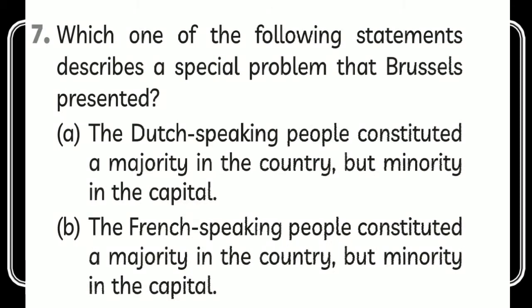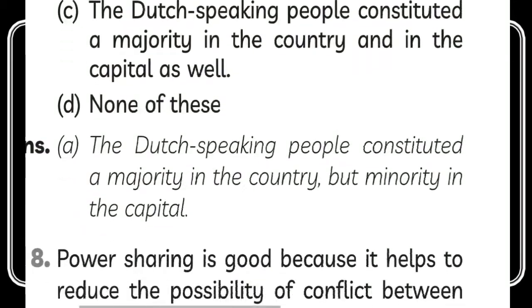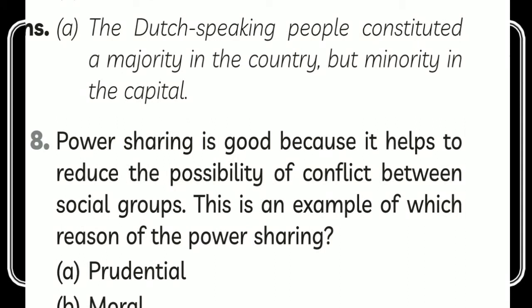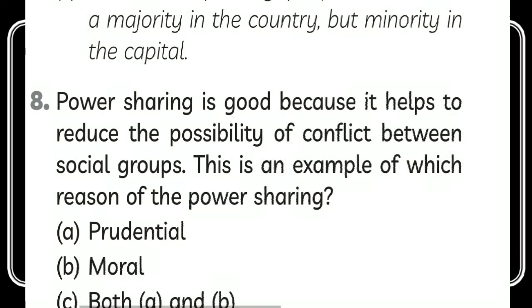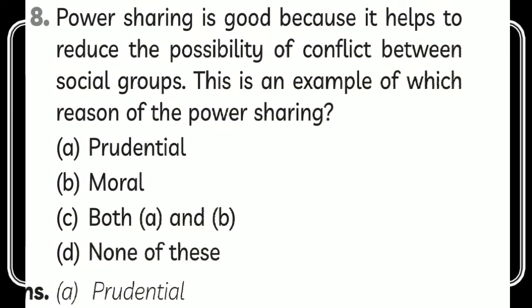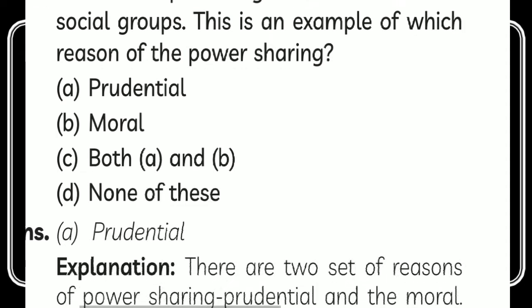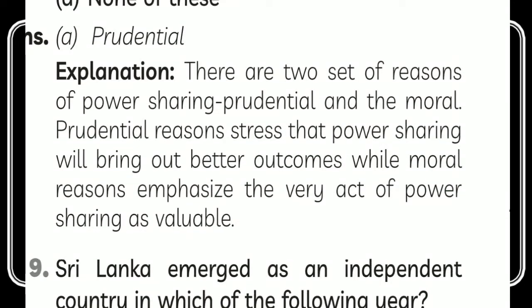The next question asks which statement describes the special problem that Brussels presented. The answer is that Dutch-speaking people constituted a majority in the country but a minority in the capital — that is the special problem. Regarding power sharing reducing the possibility of conflict between social groups: this is an example of the prudential reason for power sharing. There are two reasons — prudential, meaning power sharing brings better outcomes, and moral, which emphasizes the very act of power sharing as a value.